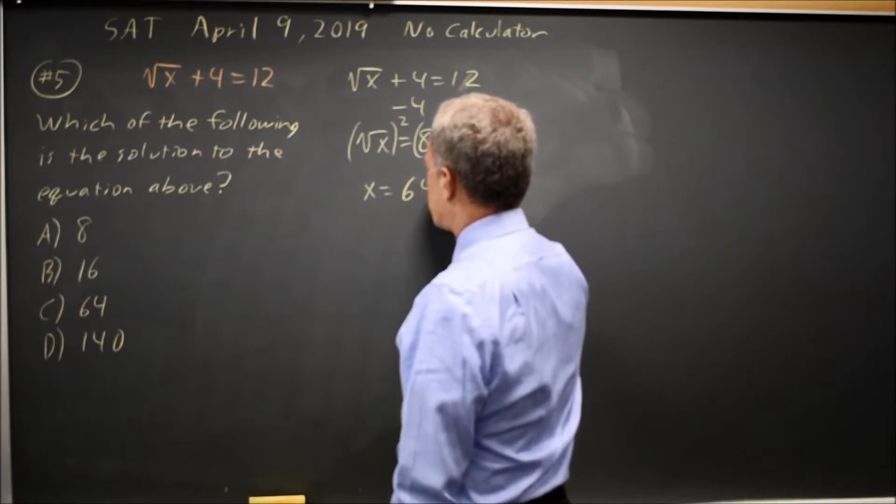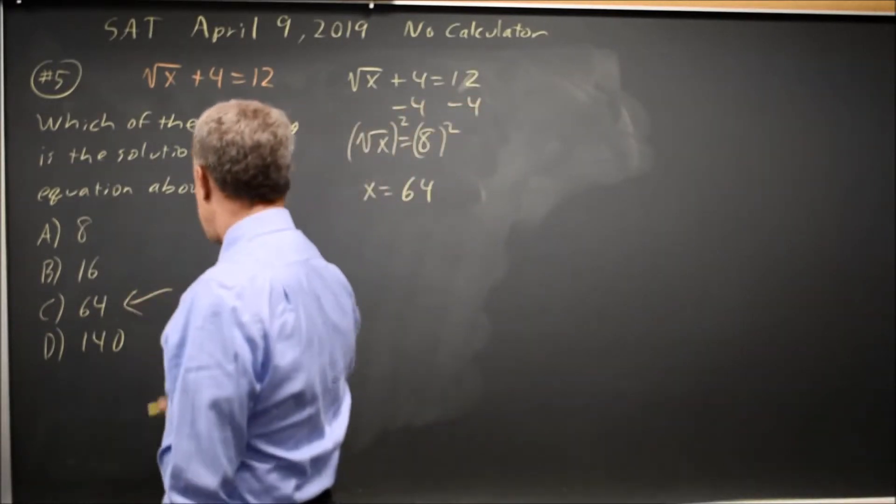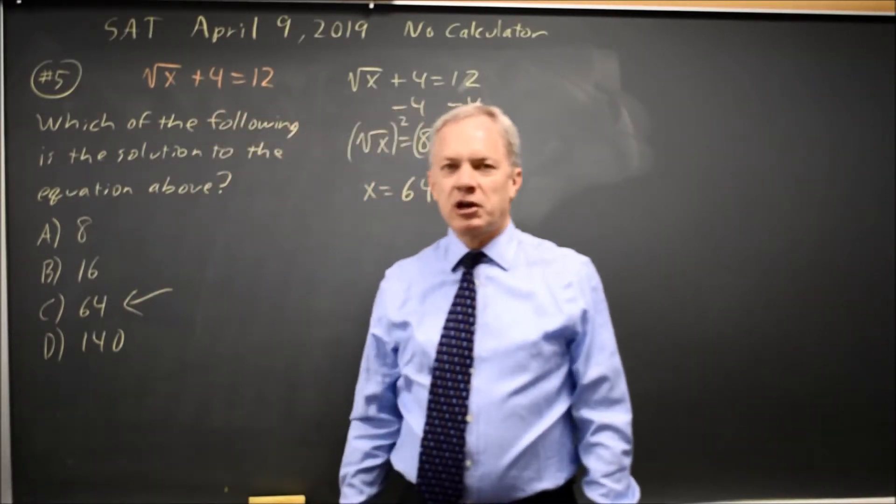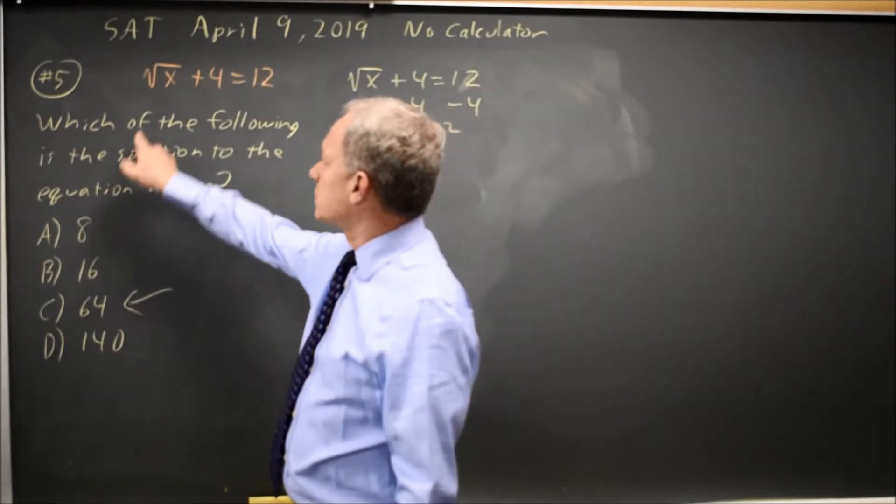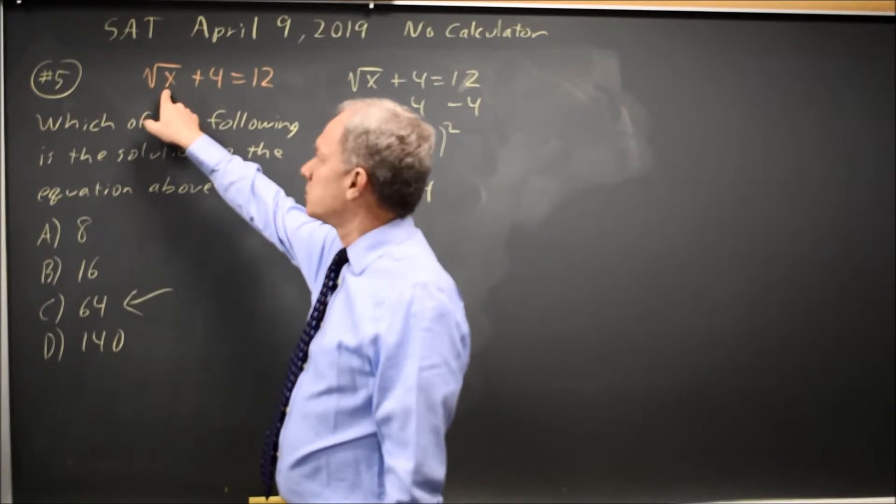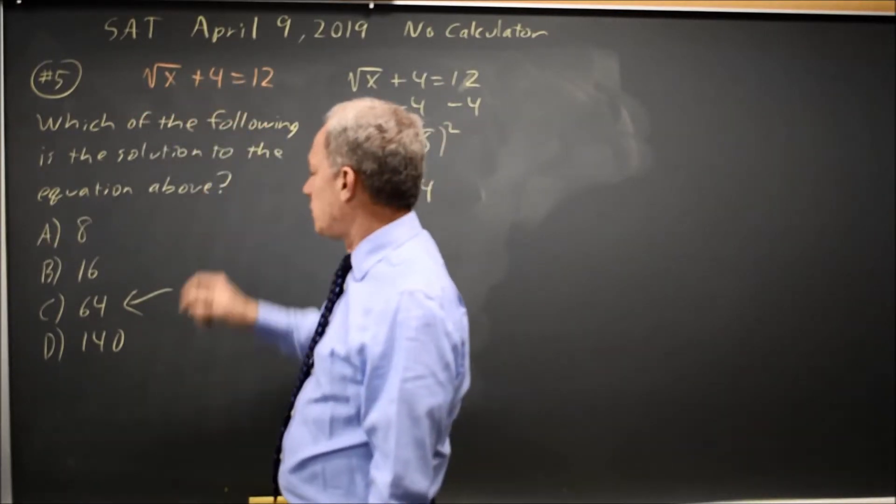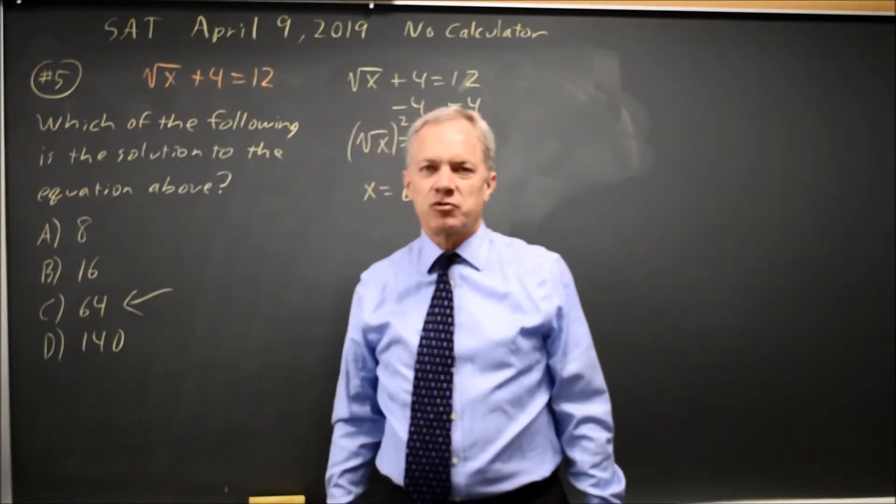So x equals 8 squared is 64. 64 would be our answer. Because we often make careless errors with arithmetic, it's prudent to substitute 64 back into the original. Square root of 64 is 8. 8 plus 4 is 12. That works. So 64 is the correct answer.